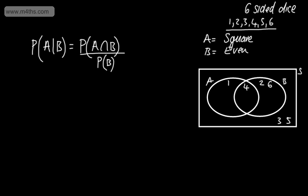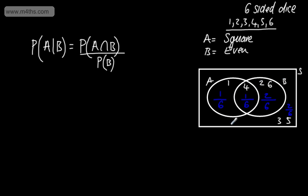Assigning probabilities, we can see that A only is going to be 1 out of 6. The intersection will be 1 out of 6. As unsimplified fractions, B only is 2 out of 6, and the outside is 2 out of 6. So let's see what this means for the probability of A given B.